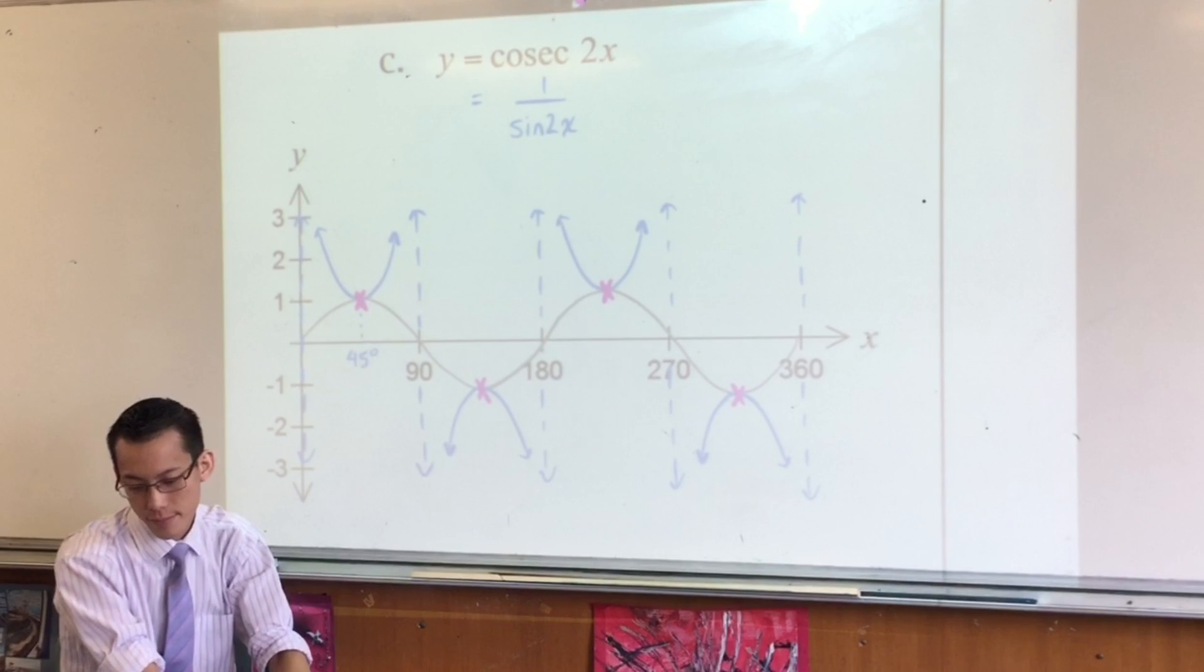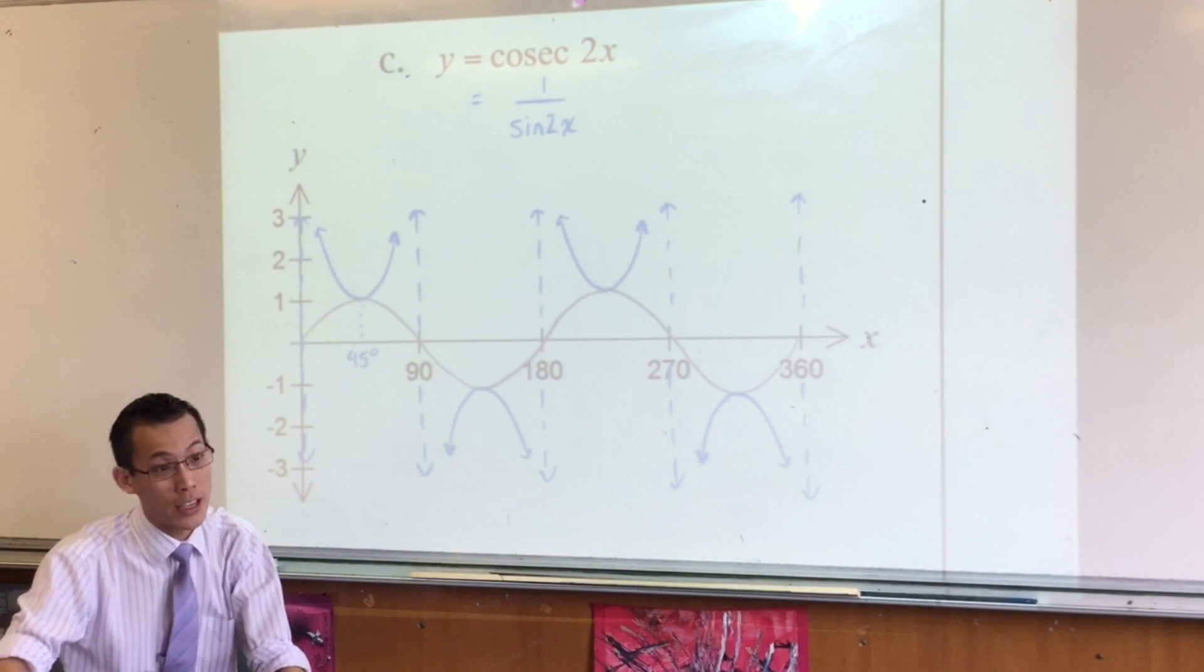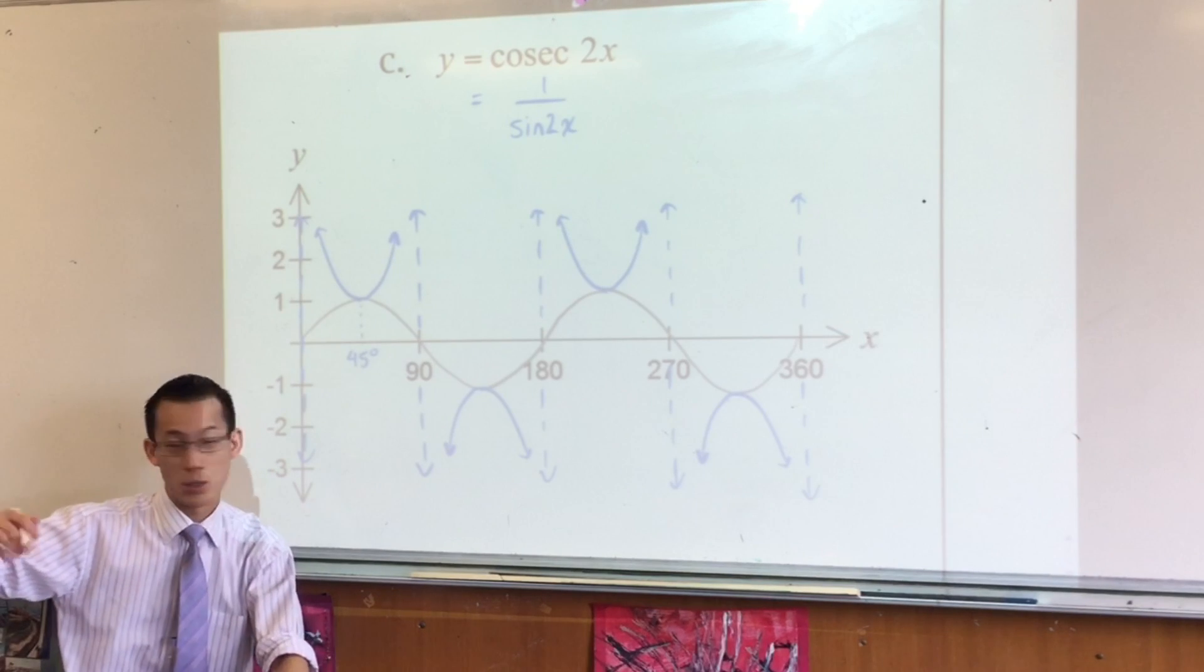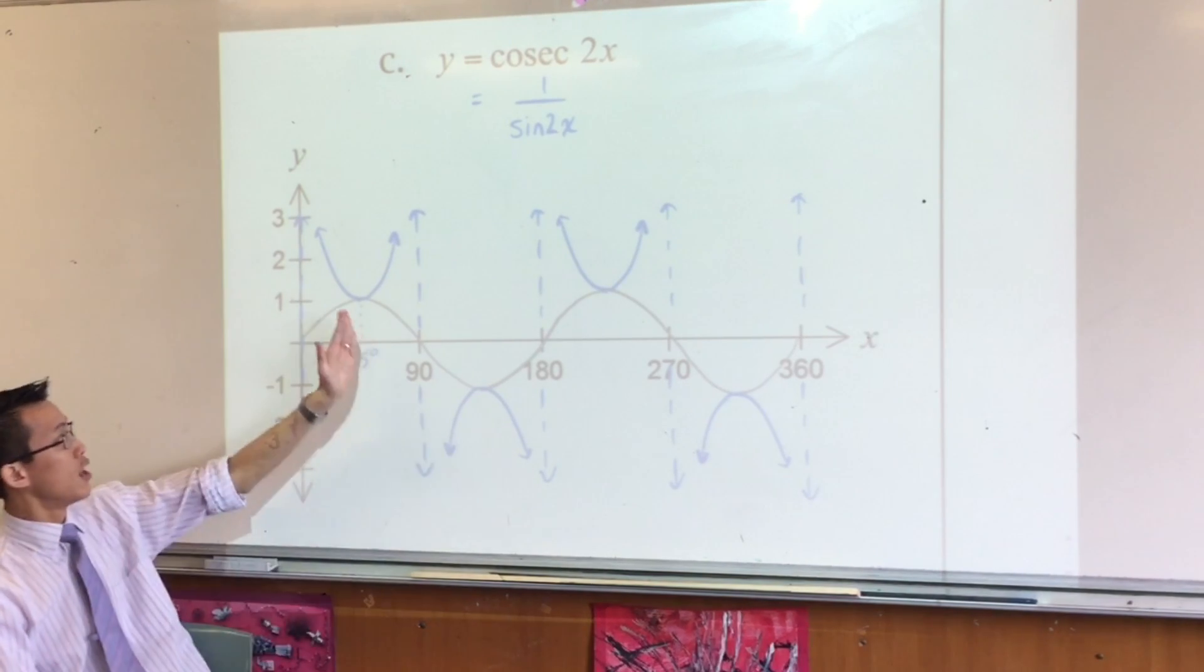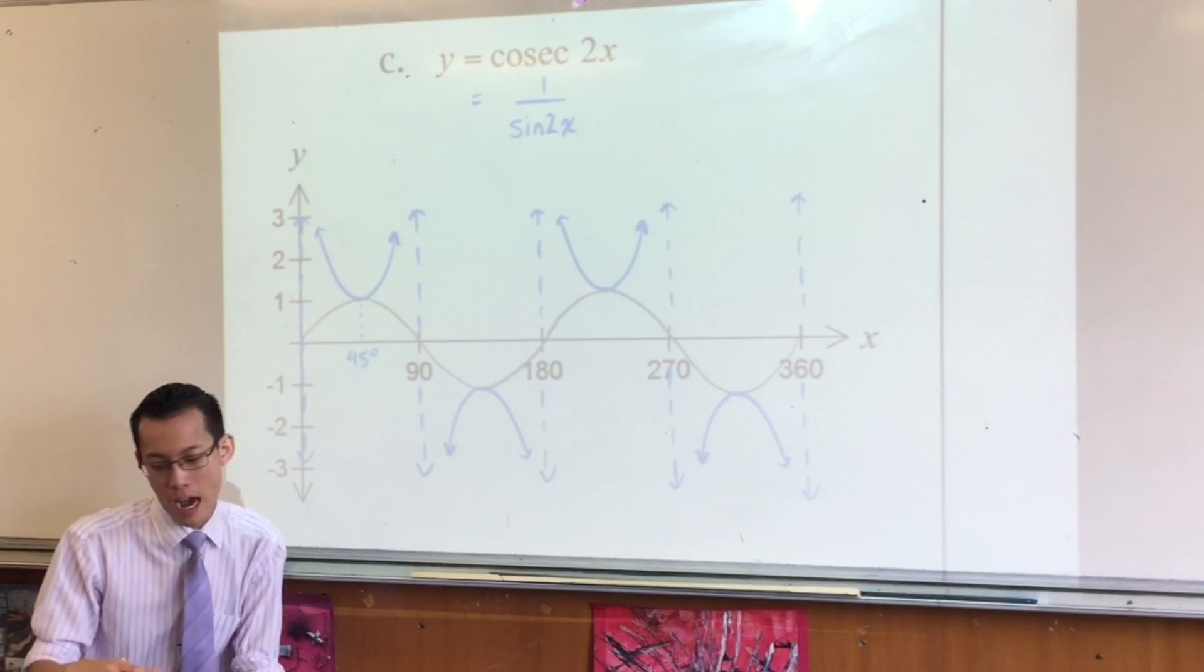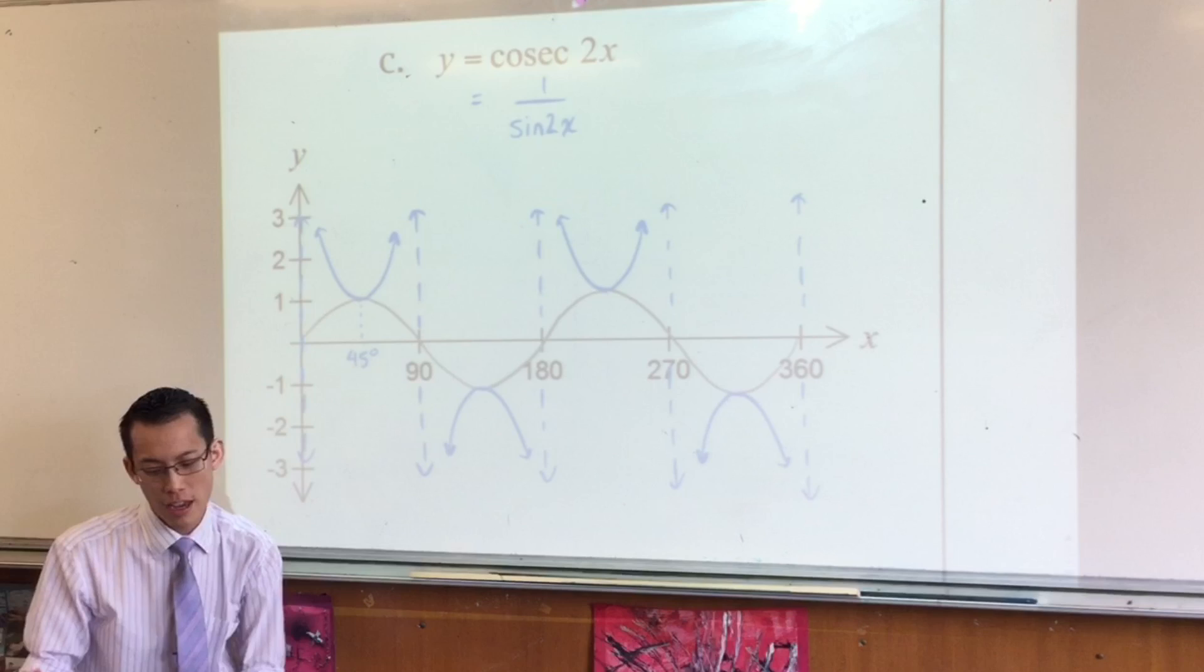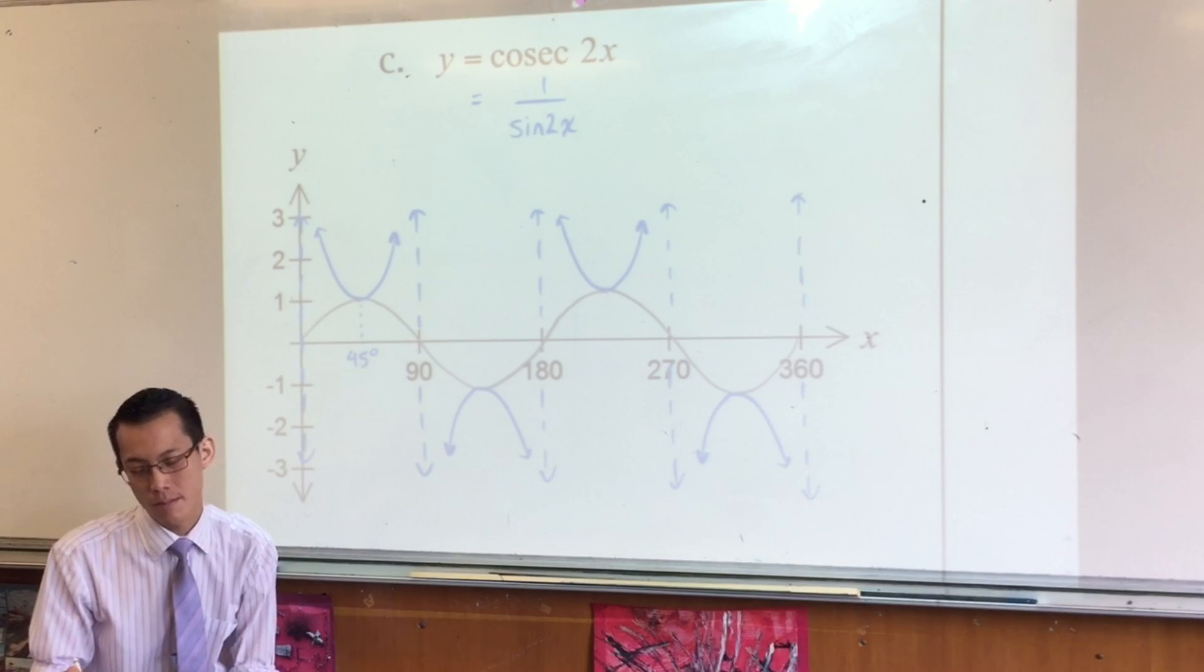Question: If you didn't put the 45, you're probably going to be okay, so long as I can clearly recognize or your marker can clearly recognize, look, that should be halfway. But, you know, it doesn't take that much effort for me to put it on, and that way I'm certain the marker can see I know what I'm doing. So if that wasn't there, you could probably get away with it, but I put it there anyway.